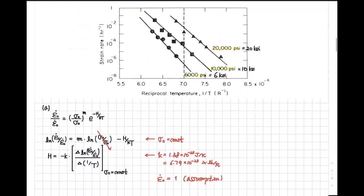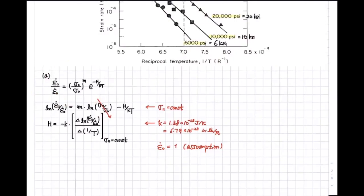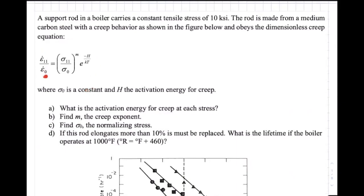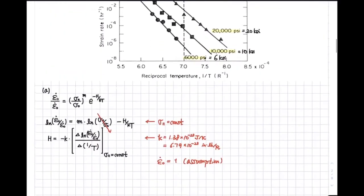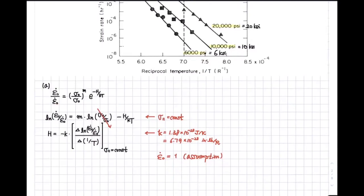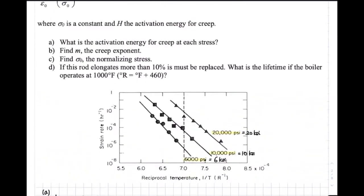Let's move on from the constitutive law. Everyone knows this constitutive law, and it is given right in the problem. As long as you start the question, you will see the constitutive law regarding creep. The assumption is that sigma₁₁ is constant and the gamma term is neglected. The activation energy H can be calculated based on the Boltzmann constant k and the differences between the strain rate values and 1/T.